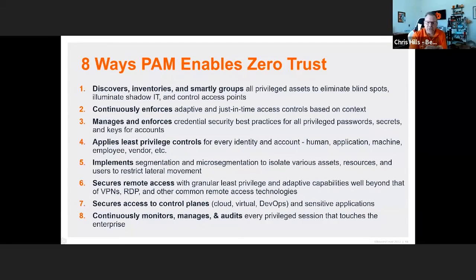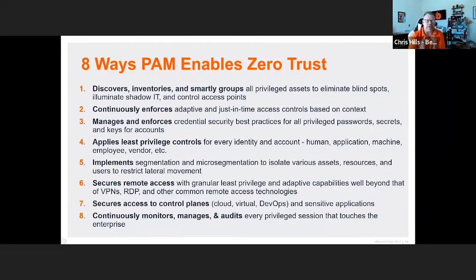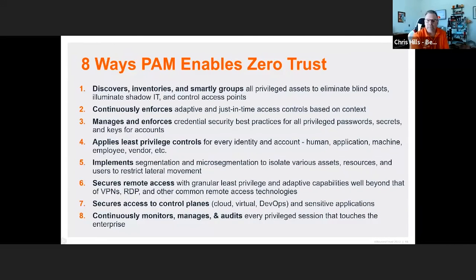The second PAM enabler is continuously enforced, adaptive, and just-in-time access control. In the realm of endpoint privilege management, we need to continually enforce this and remove the ability for users to operate with administrative rights on their endpoints. Users should operate as standard users, and when they need to elevate rights, that can be done in a just-in-time manner. The third enabler is managing and enforcing credential security best practices — let the PAM solution do what it does best: manage and enforce password and credential rotation, session management, passwords, secrets, and SSH keys.